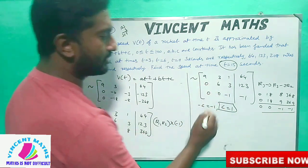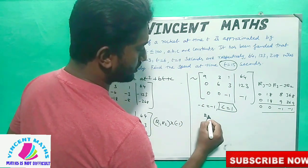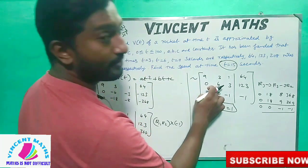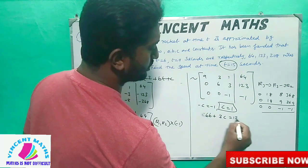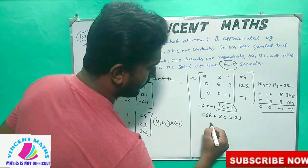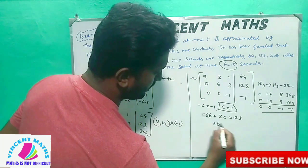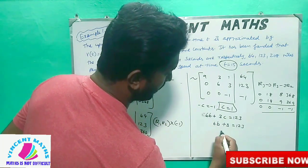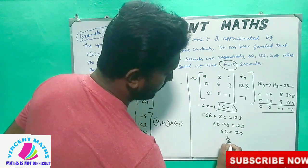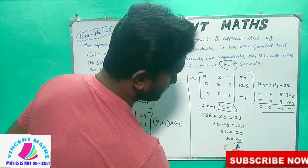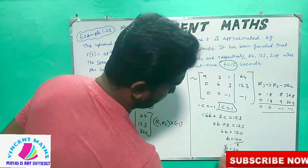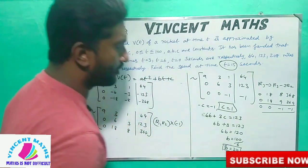Now for the second equation: 6B plus 3C equals 123. Substituting C equals 1: 6B plus 3 equals 123, so 6B equals 120, therefore B equals 120 divided by 6, which gives B equals 20.